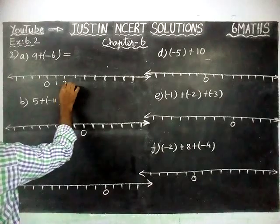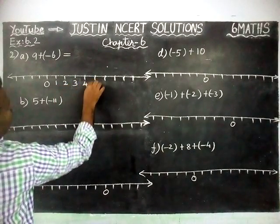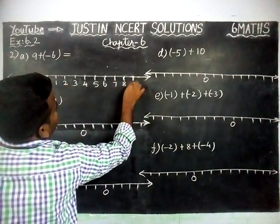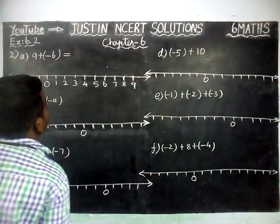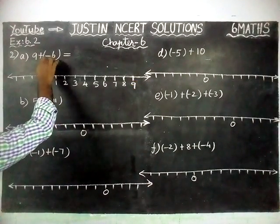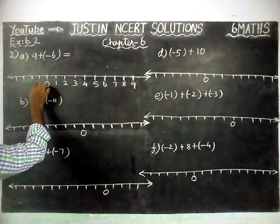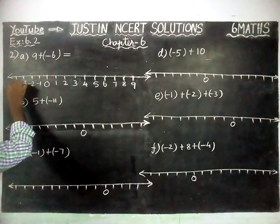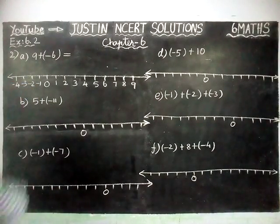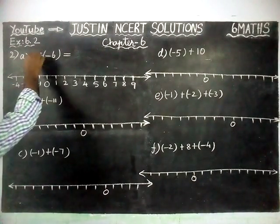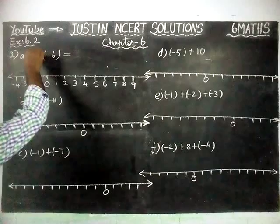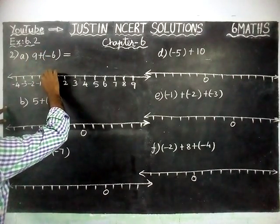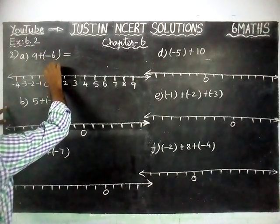We will write the numbers: 1, 2, 3, 4, 5, 6, 7, 8, and 9 on the right-hand side. Then on the left-hand side, negative numbers: minus 1, minus 2, minus 3, minus 4. Now, the first number is 9, so from 0 we have to jump to 9.